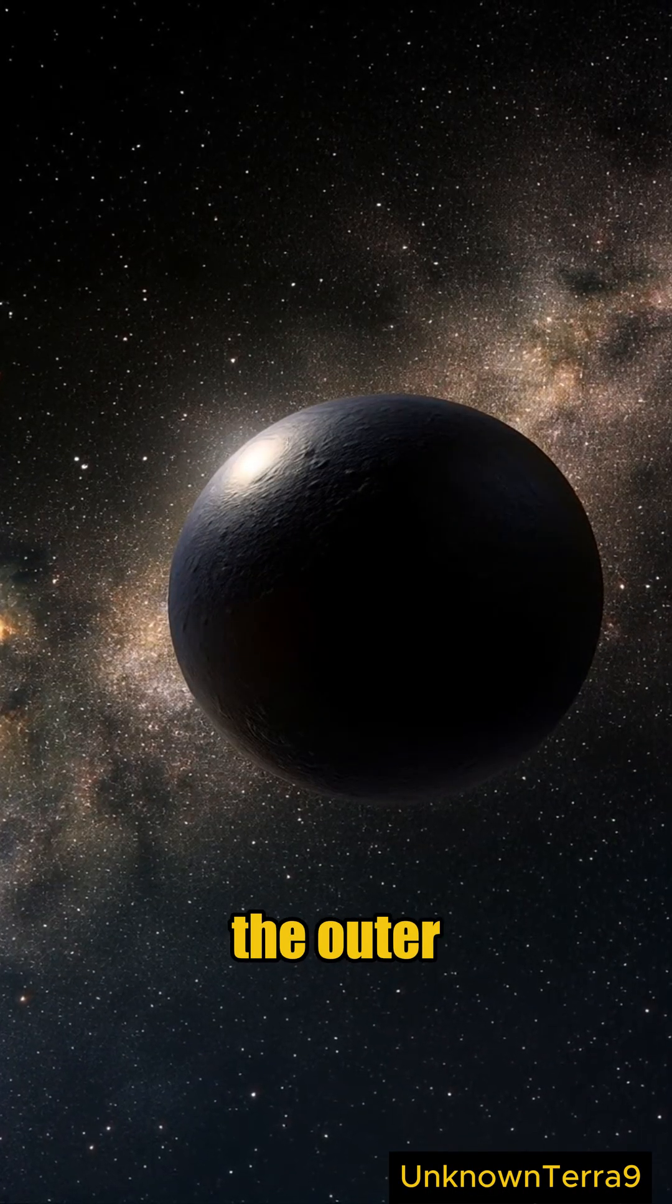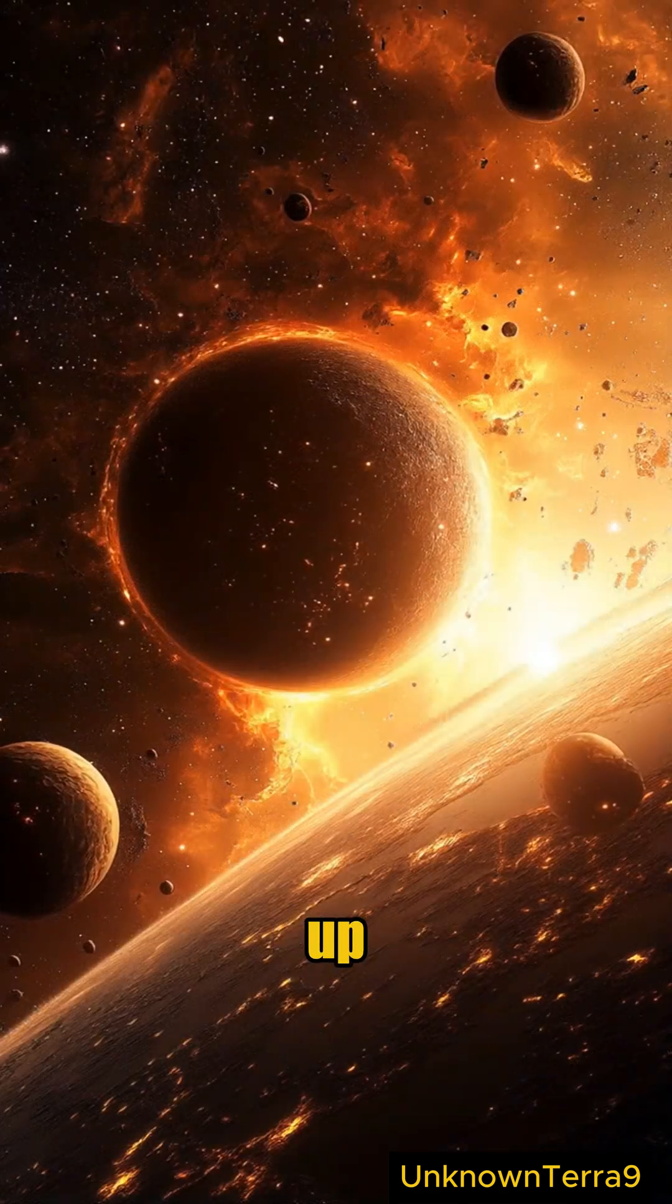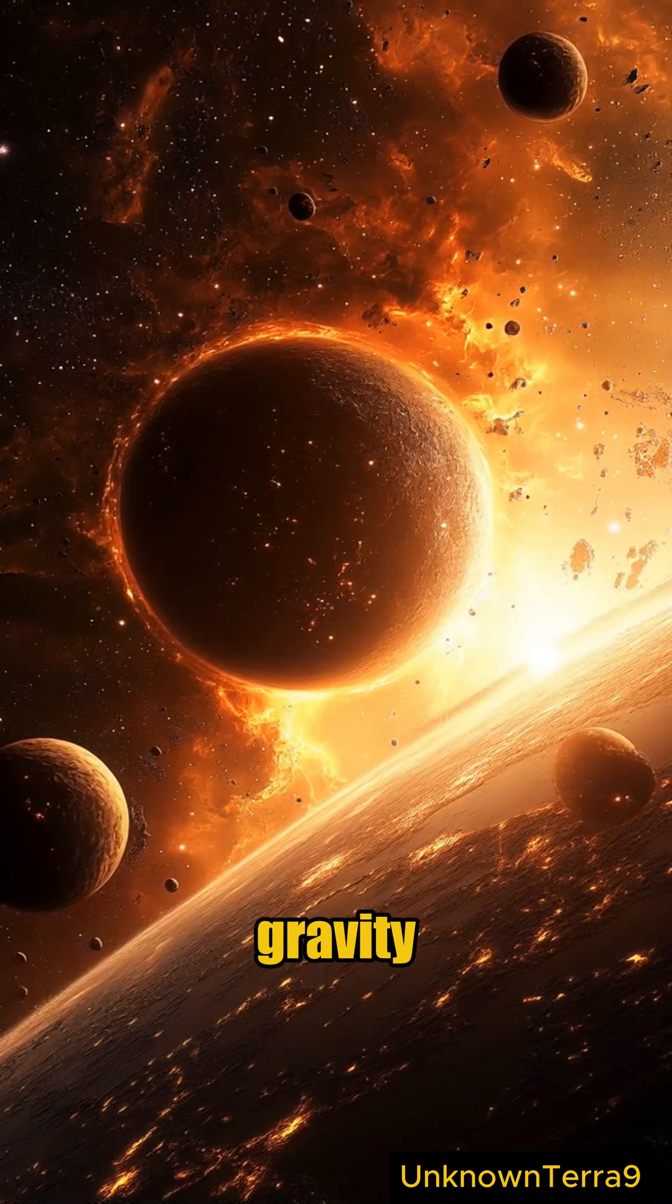Planet Nine may be hidden in the outer solar system. It could have up to 20 moons, superheated by gravity.